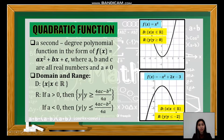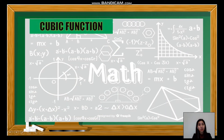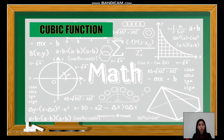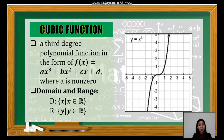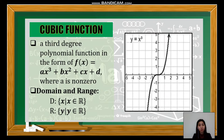The next function is the cubic function. It is a third-degree polynomial function wherein the term with the highest exponent of 3 should not be equal to 0. The domain and range of any cubic function are both the set of real numbers.